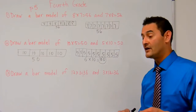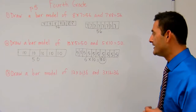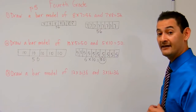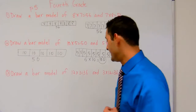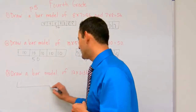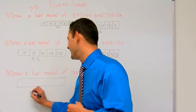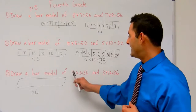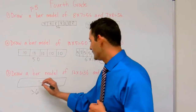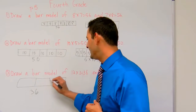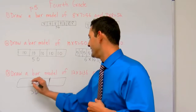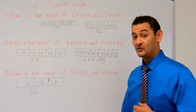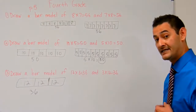Now let's draw a bar model of 12 times 3 equals 36 and 3 times 12 equals 36. First I'm going to start with 12 times 3 — I'll draw my bar model, and the total is 36. So I'm going to do it 3 times: 1, 2, 3. That's 12, 12, and 12. So 12 times 3 equals 36.